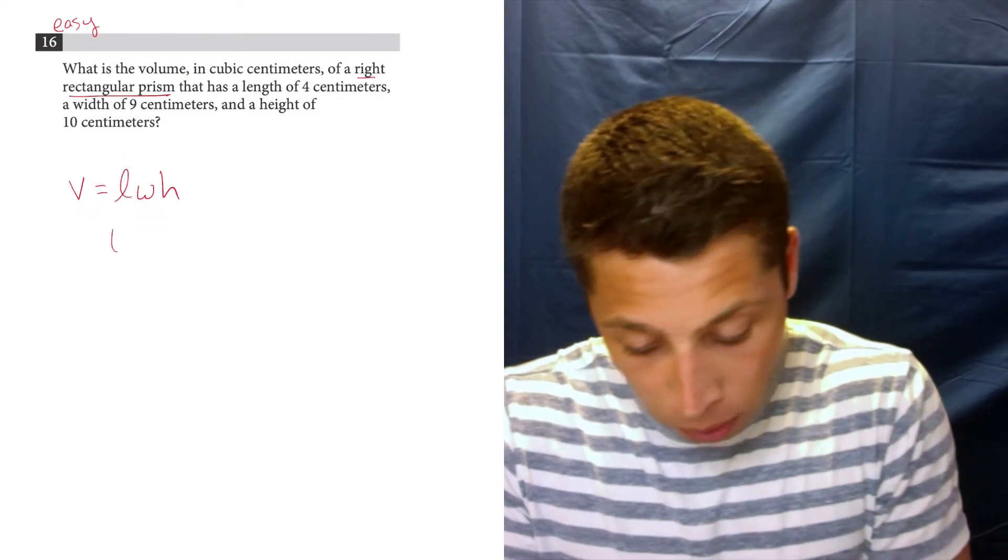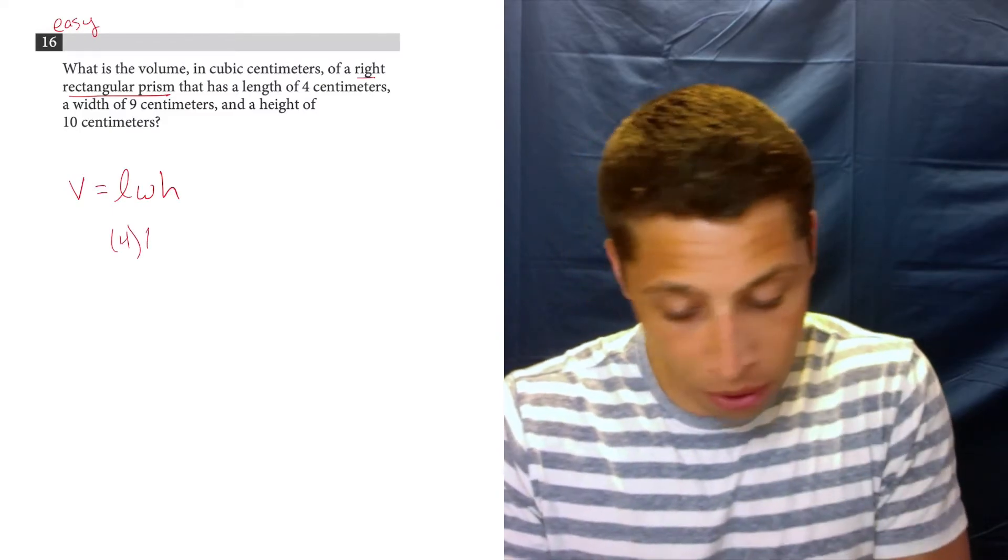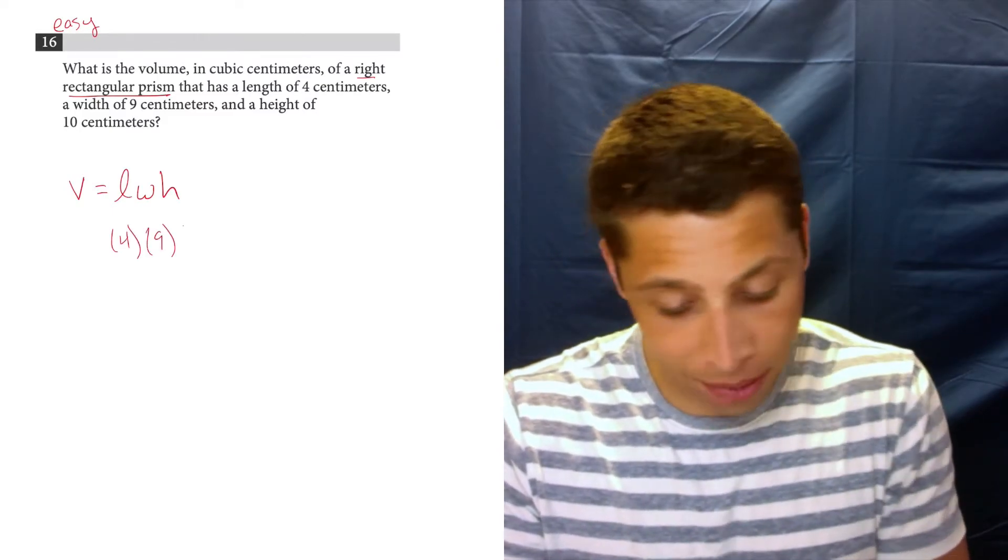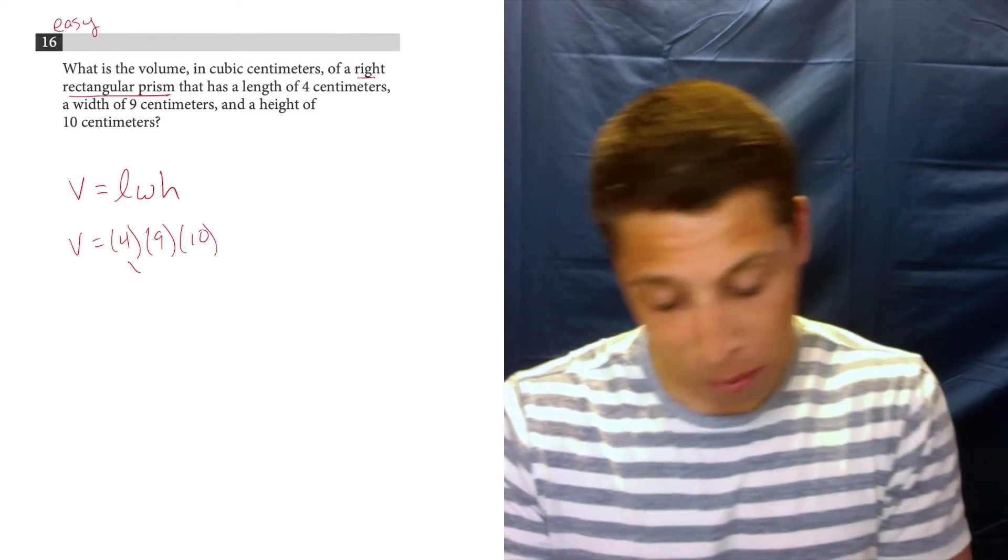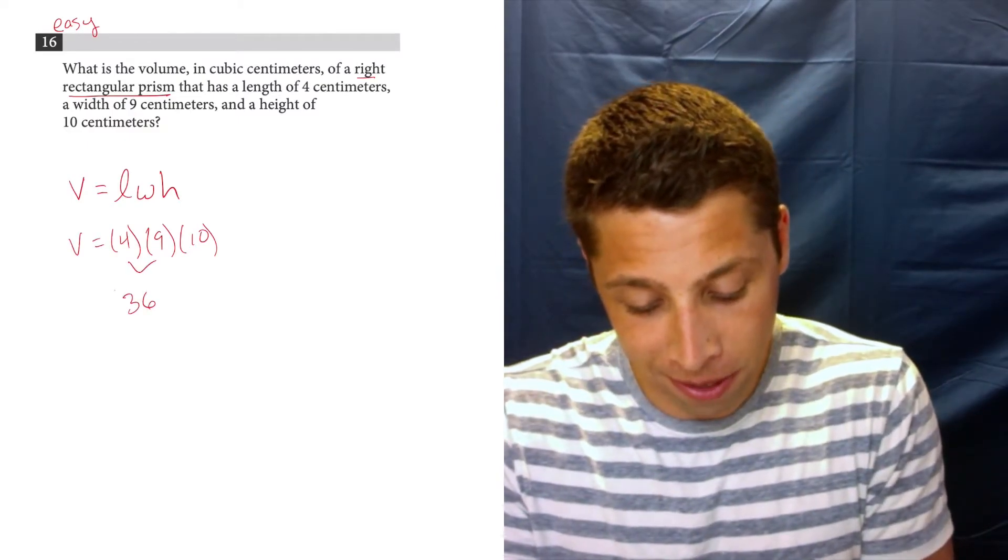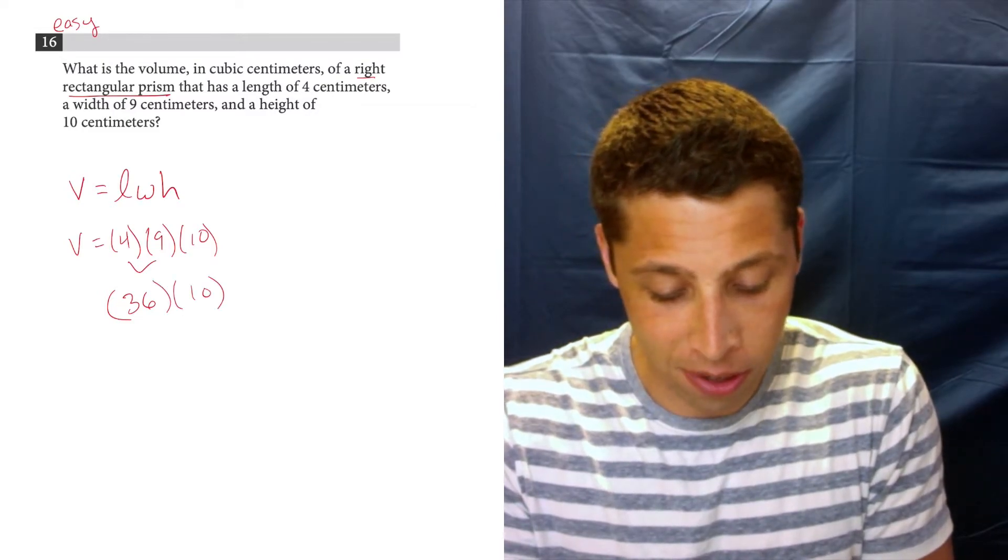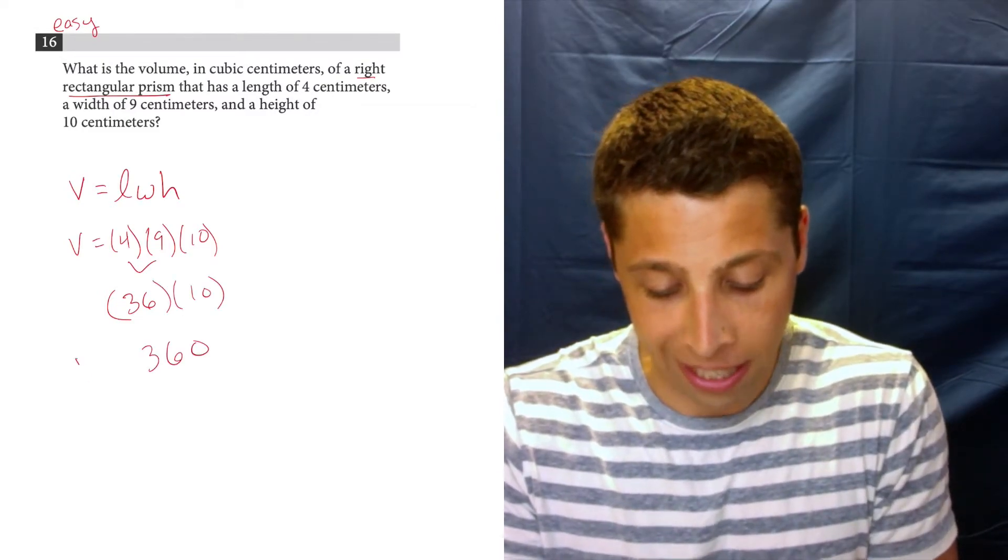So we're given a length of 4, a width of 9, a height of 10. Let's multiply 4 times 9 first. 36. 36 times 10 is 360.